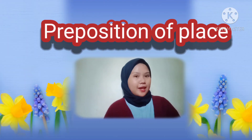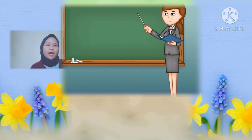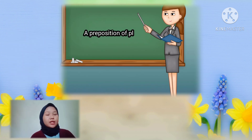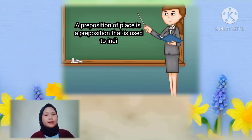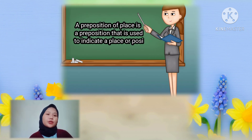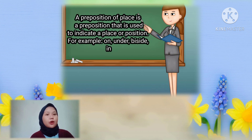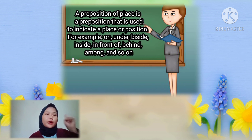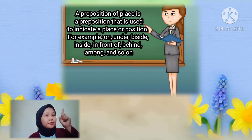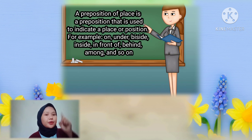The second is prepositions of place. A preposition of place is a preposition that is used to indicate a place or position. For example: on, under, beside, inside, in front of, behind, among, and so on.